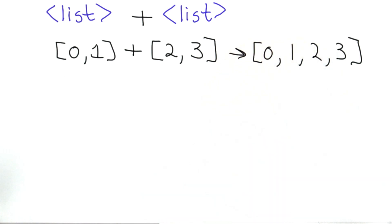So what plus does, like concatenation for strings, is it produces a new list. It doesn't mutate either of the input lists.